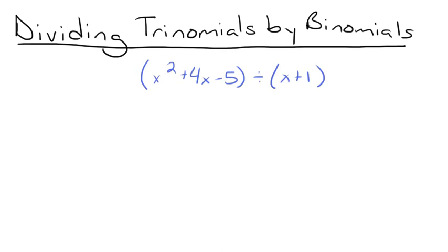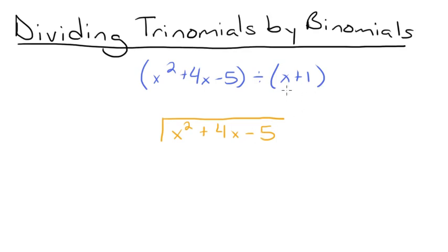We're going to set up our long division by putting our trinomial underneath the house. So we have our little house right here — this is just what we use to long divide. We're going to put the trinomial under here: x squared plus 4x minus 5. And then we're going to put our binomial on the left, x plus 1. Now we want to figure out how many times the first term of our binomial goes into the first term of our trinomial.